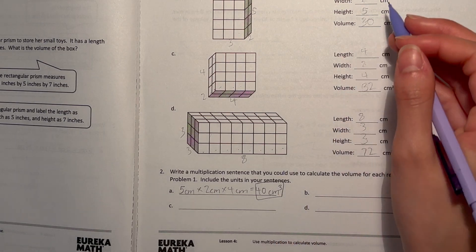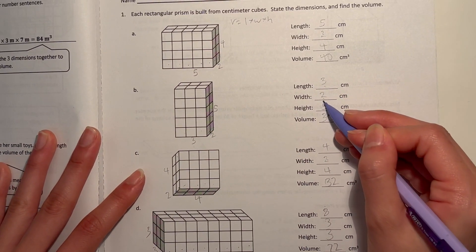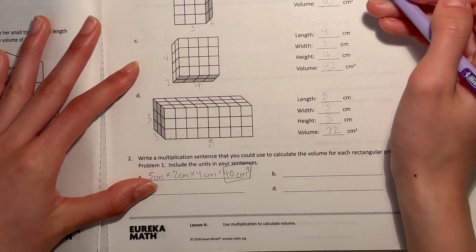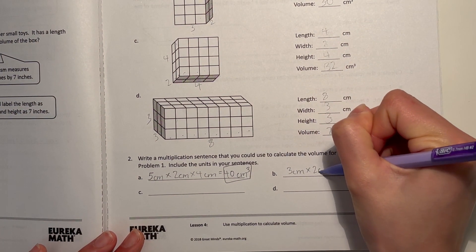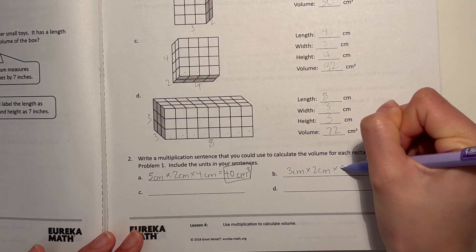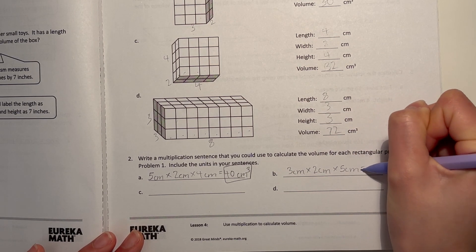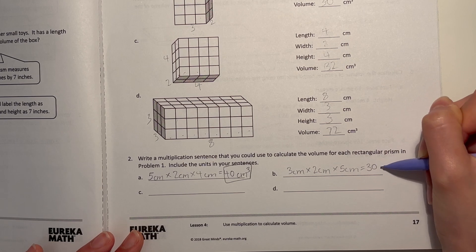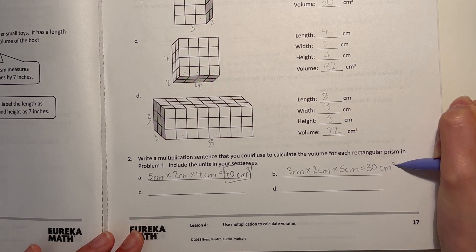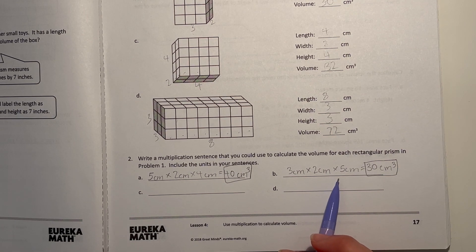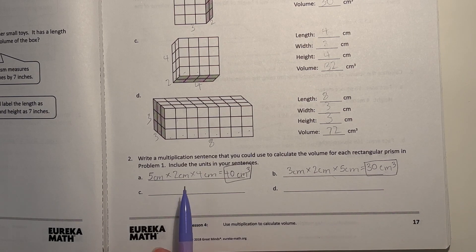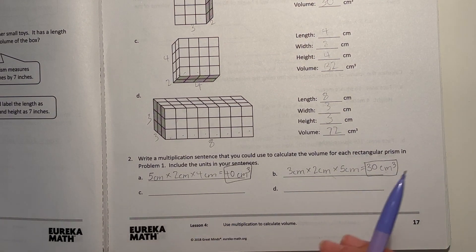Now B, our length was three times two times five, so here we write three centimeters times two centimeters times five centimeters, and our volume was 30 centimeters cubed. When we're calculating normally, we don't usually write the units after each number, only for the final answer, but here it just wants us to practice doing that.